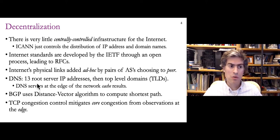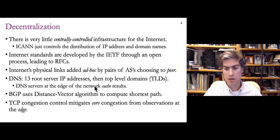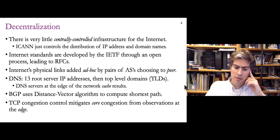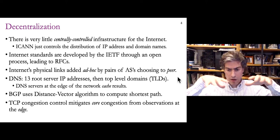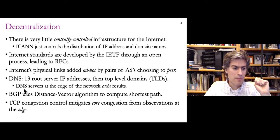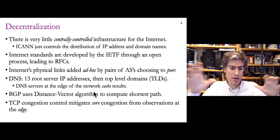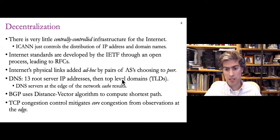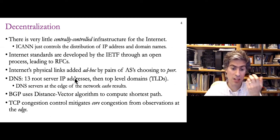DNS — the domain name service — is also a decentralized distributed system following this theme. DNS has 13 root servers, which are implemented by many machines, giving information about where to find top-level domain information. Below that are domain DNS servers, subdomain name servers, and so on — a hierarchy of servers mapping IP addresses to domain names and vice versa. With caching at the edge, all these things create a decentralized hash table.